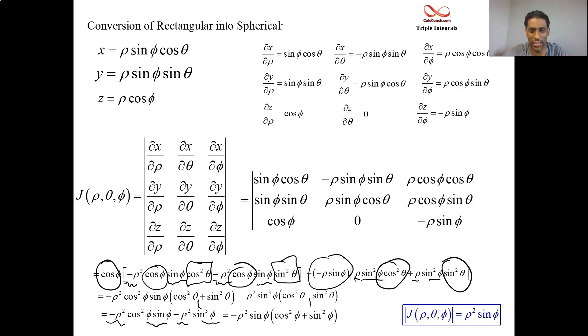Sorry for the long, drawn-out explanation. I just want you to see it worked out one time. Just like you had r dr d theta, now you have rho squared sine phi d rho d phi d theta.